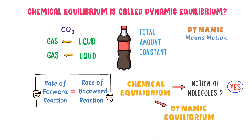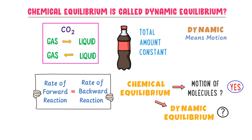Every chemical equilibrium is also called dynamic equilibrium. It is because particles of reactants and products still move from one phase to another phase.